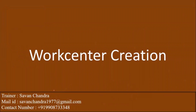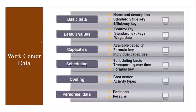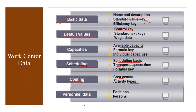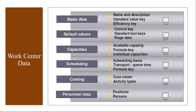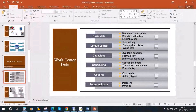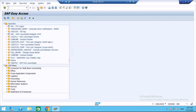Now we will create a work center in the system. In the basic data tab, you maintain the work center name and description. Standard value key is not used in the CS module. In default values, you maintain the control key — the most important one. In the capacities tab, you maintain available capacities and formulas. In the scheduling tab, you maintain the scheduling basis and formulas. In the costing tab, you maintain the cost center and activity types. The T-code is IR01 — create work center. Enter the plant.